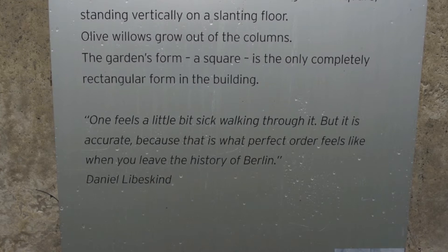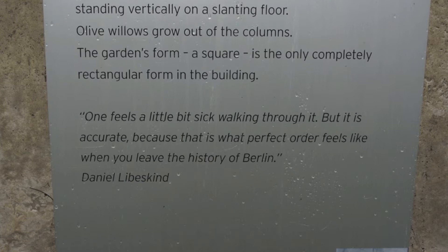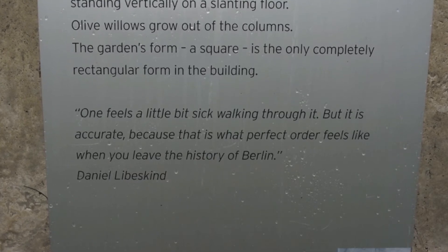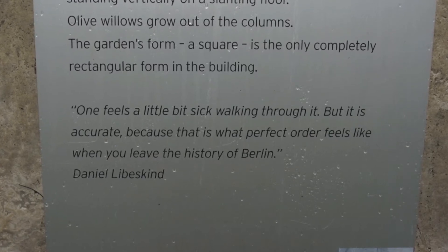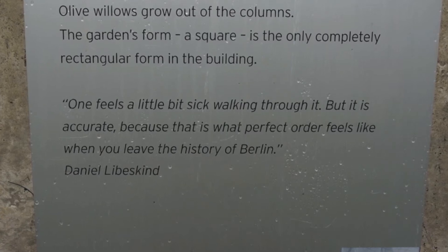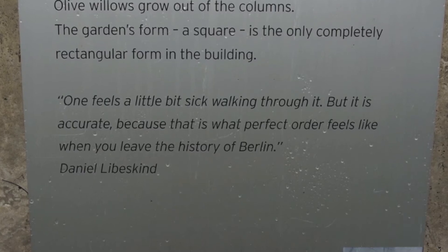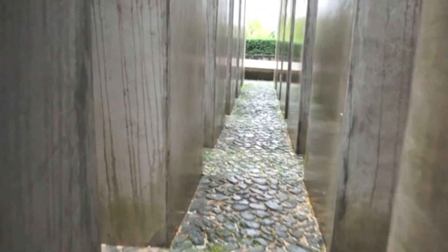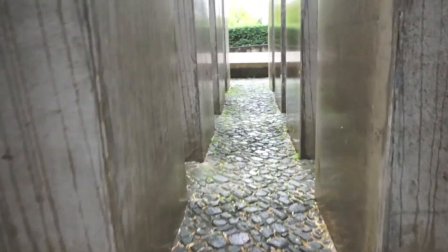As we zoom in on the quote here, I think for me this was one of the most powerful and disturbing aspects of my visit to the museum. Quoting Libeskind: 'One feels a little bit sick walking through it, but it is accurate because that is what perfect order feels like when you leave the history of Berlin.' What was significant about this space — and it's very hard to describe, you have to certainly visit — is the ways that the columns function with the uneven brick ground below. There is also an incline as you walk through these passageways between the columns. The overall effect, and the sense of isolation as you look up and feel trapped, is incredibly disturbing in an existential sense.